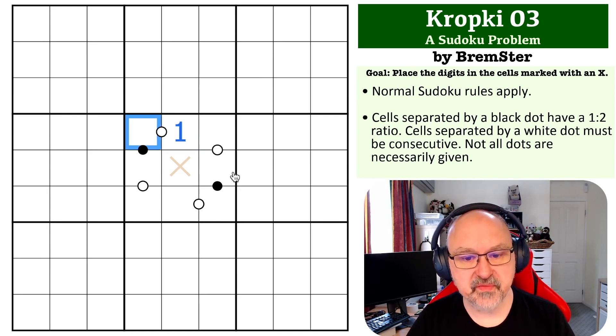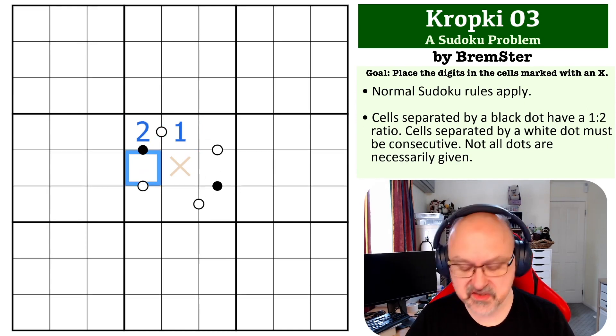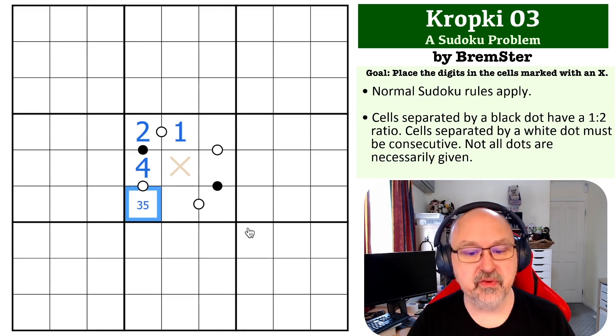If you start this with a one, the next one has to be a two. Because you can't go back to one, the next dot has to be a four. And this would have to end with three or five, which would be consecutive with the four.